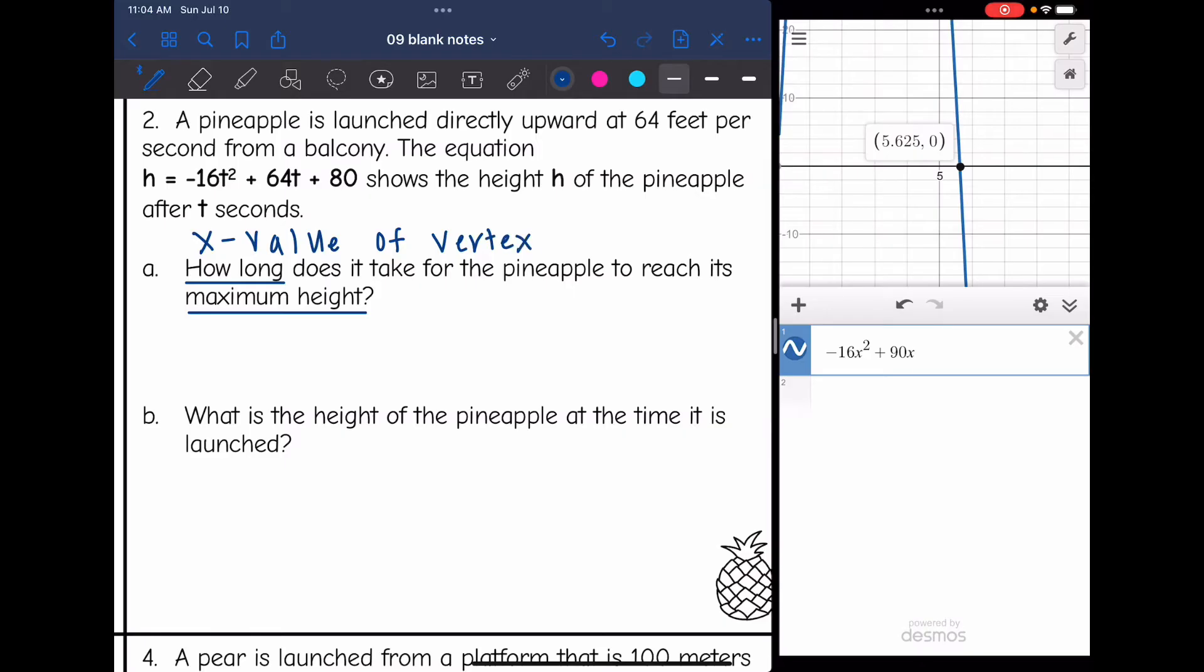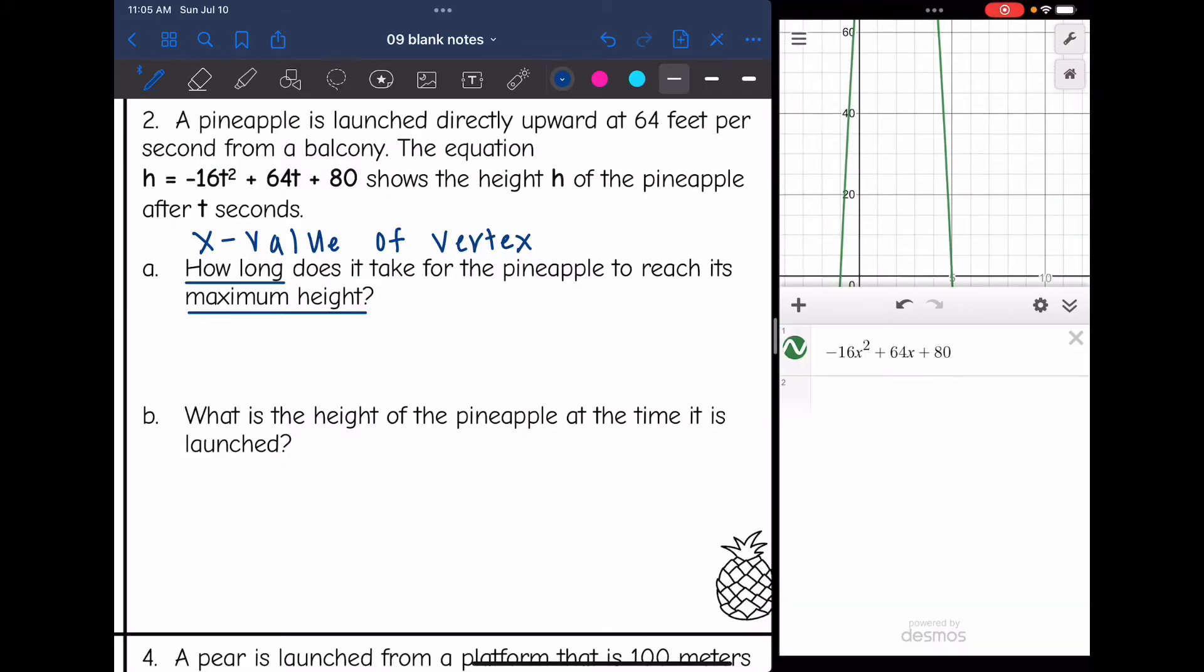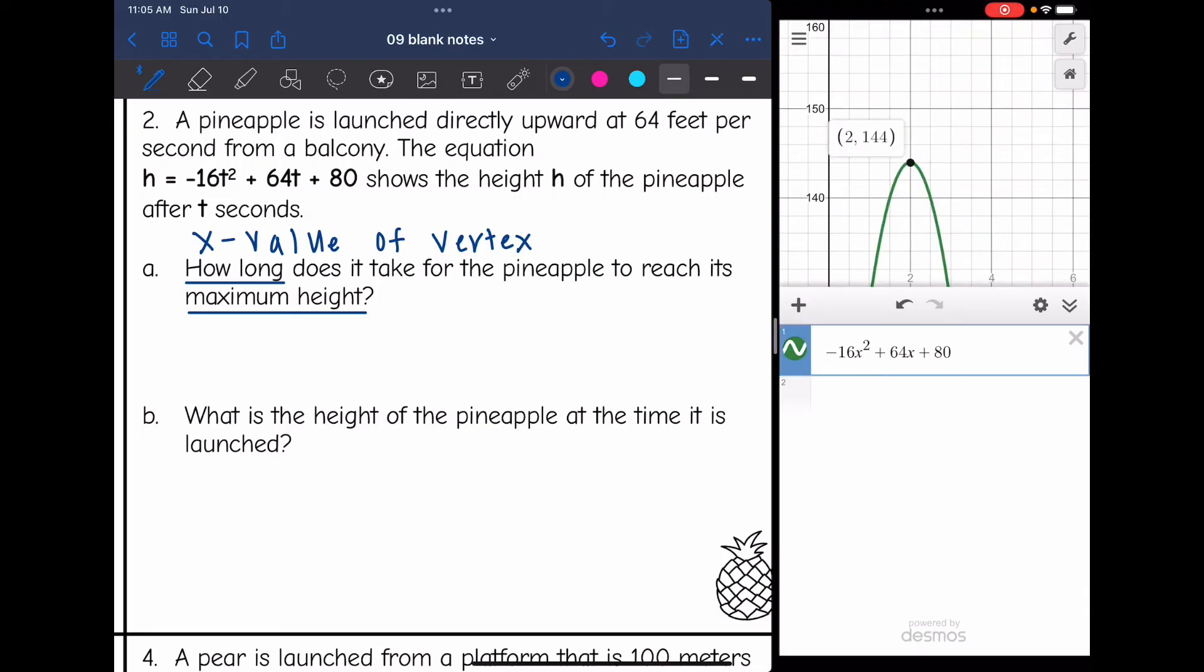Let's graph this new equation, -16x² + 64x + 80. And let's go to the vertex. It looks like after two seconds, it will reach that maximum height of 144 feet.